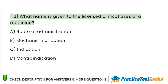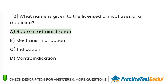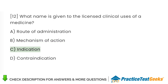What name is given to the licensed clinical uses of a medicine? A. Route of administration. B. Mechanism of action. C. Indication. D. Contraindication.